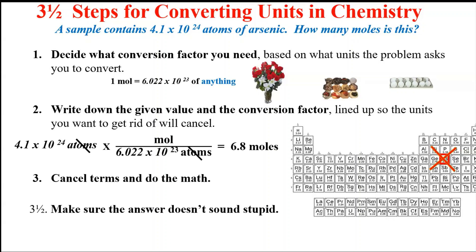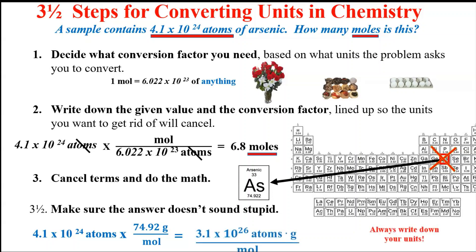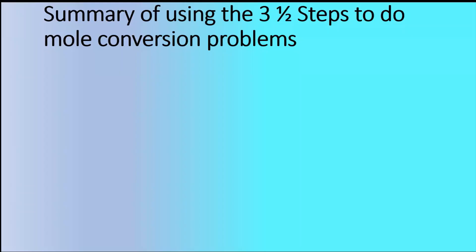The question asked for moles, and we got moles — that's a good sign. Had we incorrectly used the atomic mass of arsenic instead, and if we included our units, we'd end up with something like 'atoms times grams per mole' — gibberish — and we'd know immediately that something went wrong. There are only one or two mistakes you can make at this stage, so catching that early is straightforward.